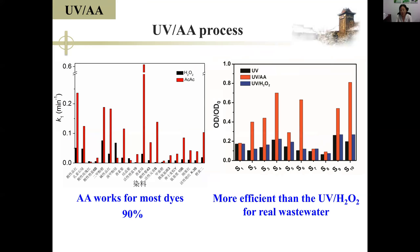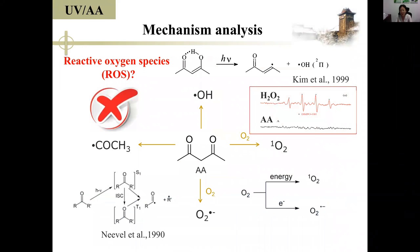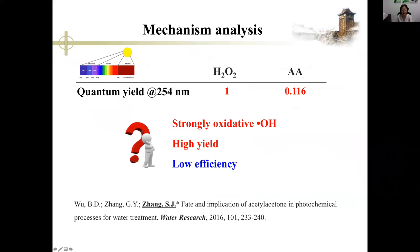We also sampled 10 real textile wastewaters from local companies. With the addition of H2O2, the decolorization efficiency is only slightly increased — some negligibly. But with the addition of AA, the decolorization is significantly enhanced. Regarding the underlying mechanism behind the high efficiency, based on limited literature research on the food chemistry of AA, there is the possibility of generating hydroxyl radicals — the most strongly oxidative radicals — and acetyl radicals. We also checked the possibility of singlet oxygen and carbonyl peroxide.